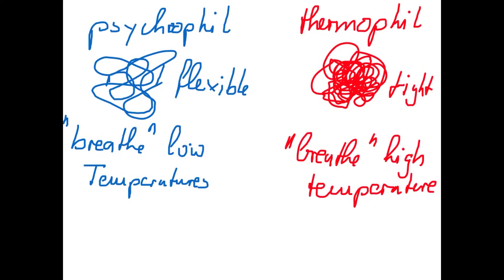For every enzyme we use, we try to find out what is the best temperature range — at which temperature is the enzyme most active? If it's a psychrophilic enzyme, we work at low temperatures. If it's a mesophilic enzyme, we work at room temperature or around 35 degrees. If it's a thermophilic enzyme, we work at very high temperatures — 90 or even 100 degrees. And the world record holder is an organism whose enzymes work at 125 degrees centigrade.